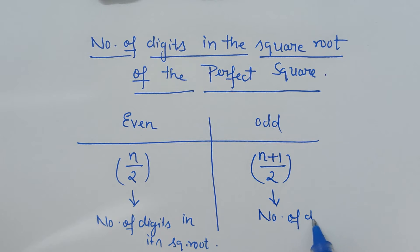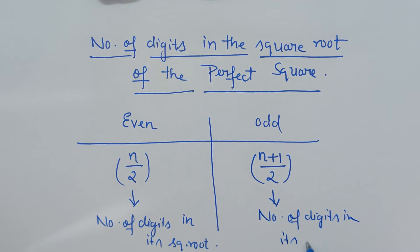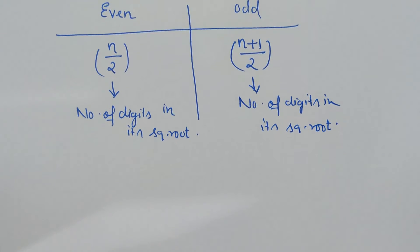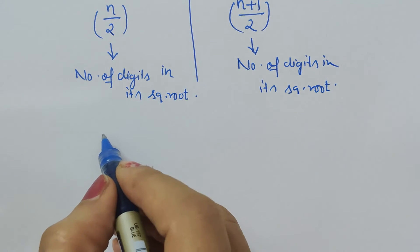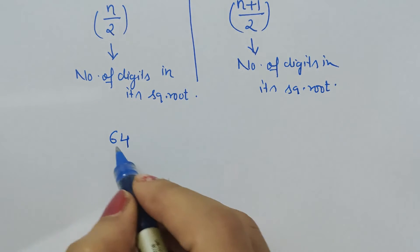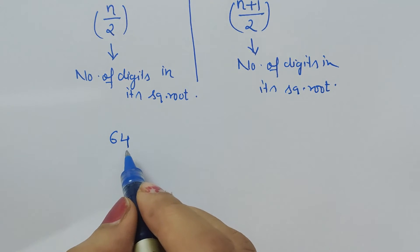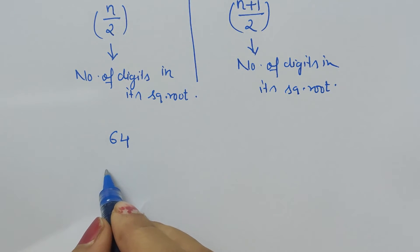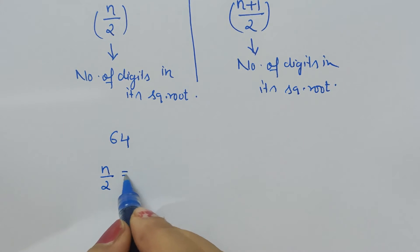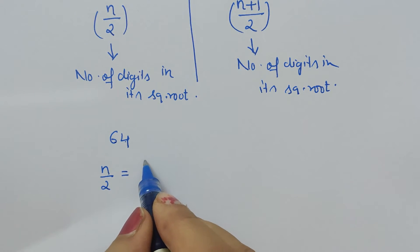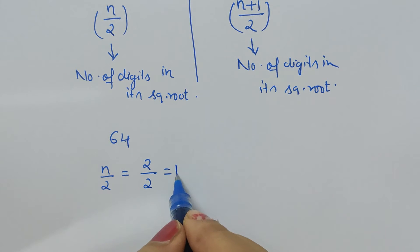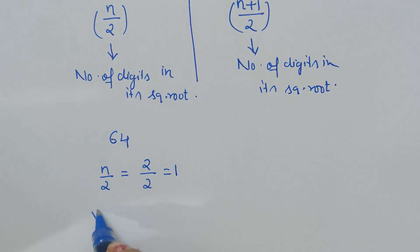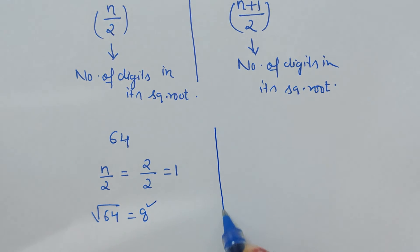Let's justify this using some basic examples. Take 64, a perfect square which has an even number of digits. Here we use the n/2 formula: there are 2 digits, so 2/2 = 1, meaning its square root will have only a single digit. And everyone knows the square root of 64 is 8, which indeed has a single digit.